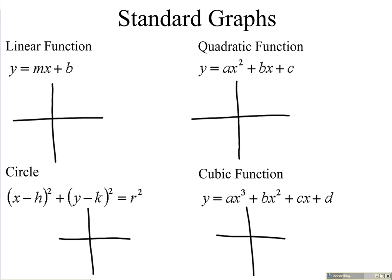First, a linear function, y equals mx plus b. To graph it, we need to know slope and y-intercept. A linear function is a straight line. Quadratic function, notice the difference. In a linear function, x is to the first power. Quadratic function, x is to the second power. If it's a quadratic function, we know it is parabola-shaped.